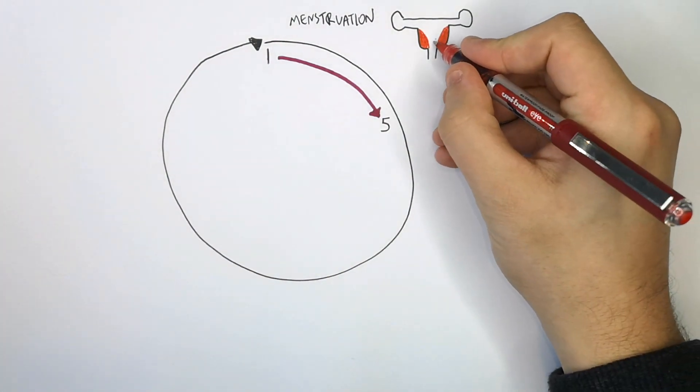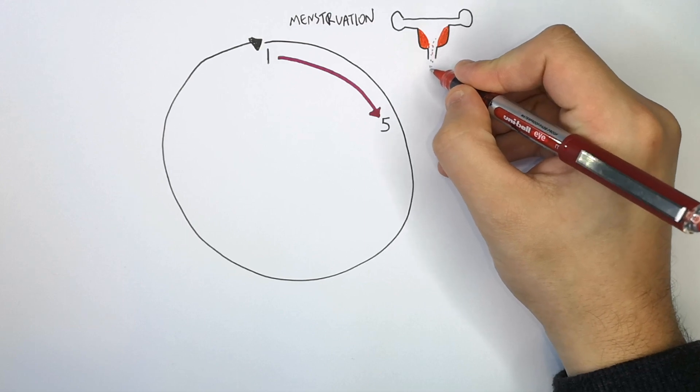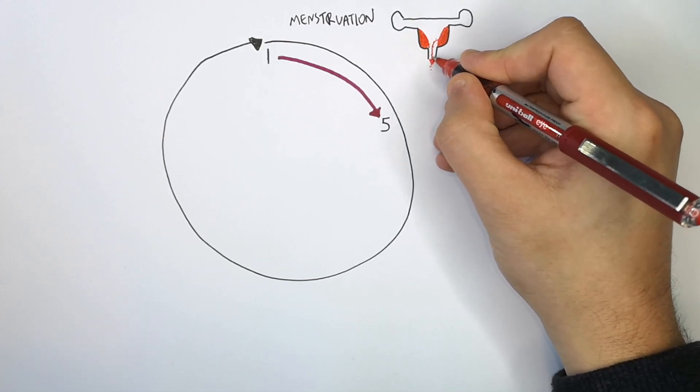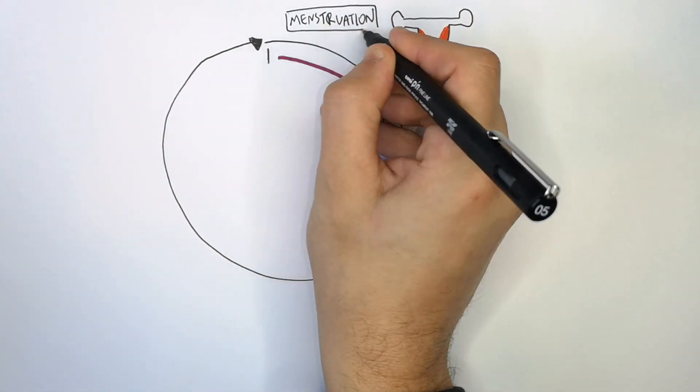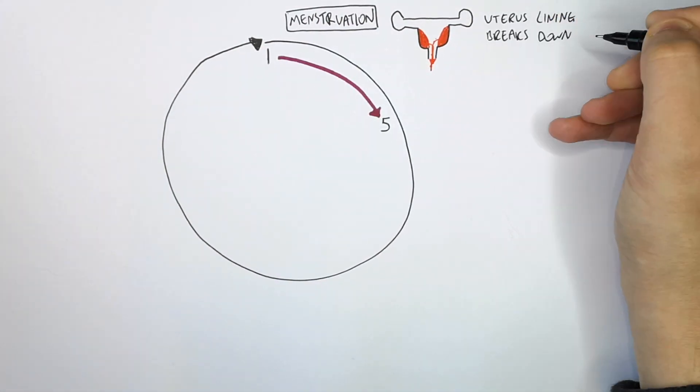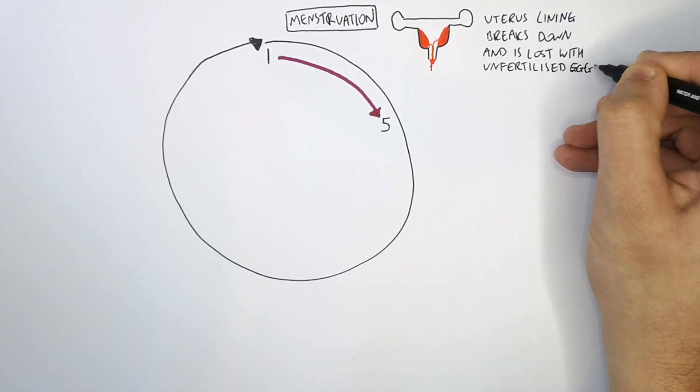Menstruation is when the blood lining is lost from the uterus and it exits through the vagina. During menstruation, the uterus lining breaks down and it is lost with the unfertilized egg.